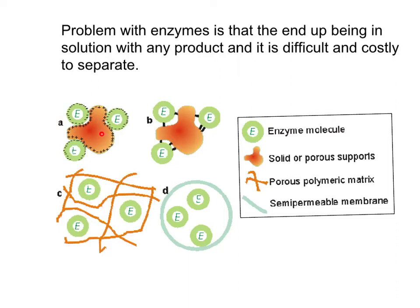The next example is a covalently bound enzyme. The enzyme is immobilized by being covalently bonded to the inert substance. These are very permanent covalent bonds that hold the enzyme to the substrate, which is slightly different from adsorption.